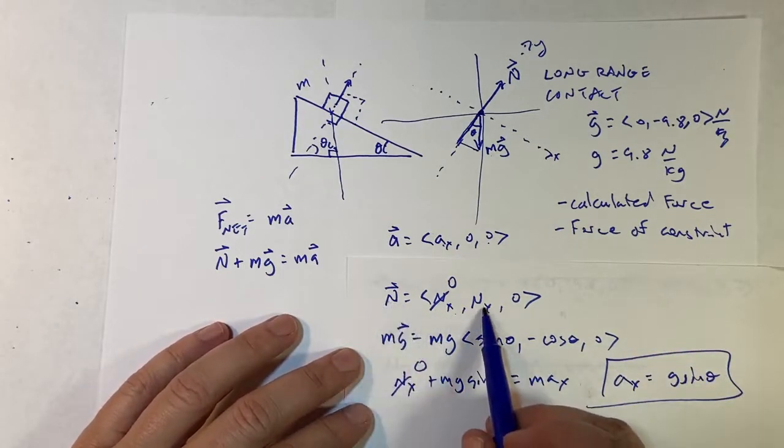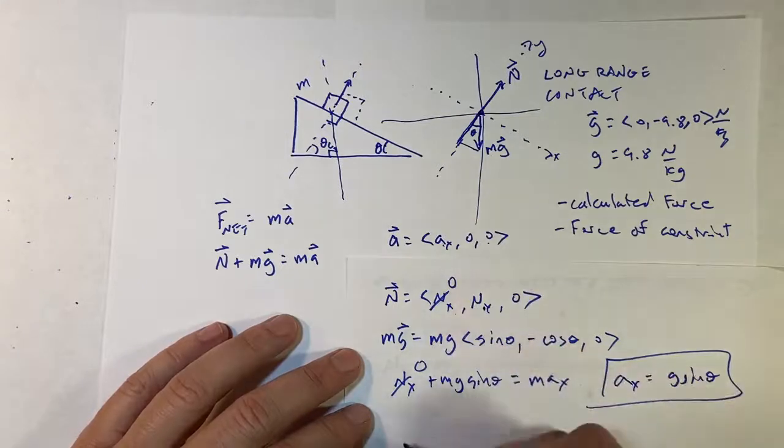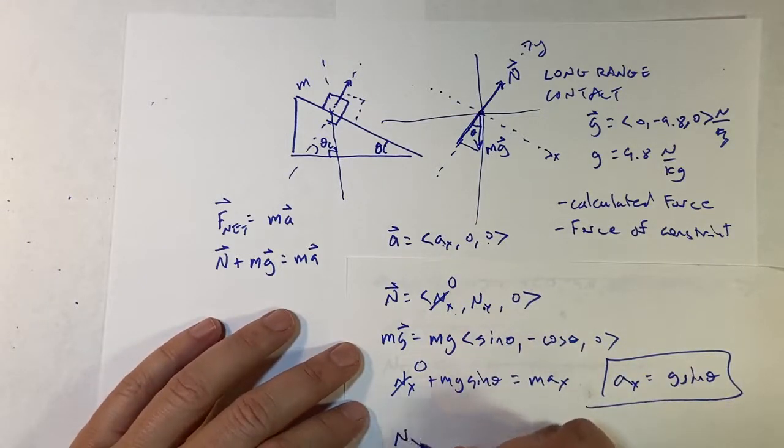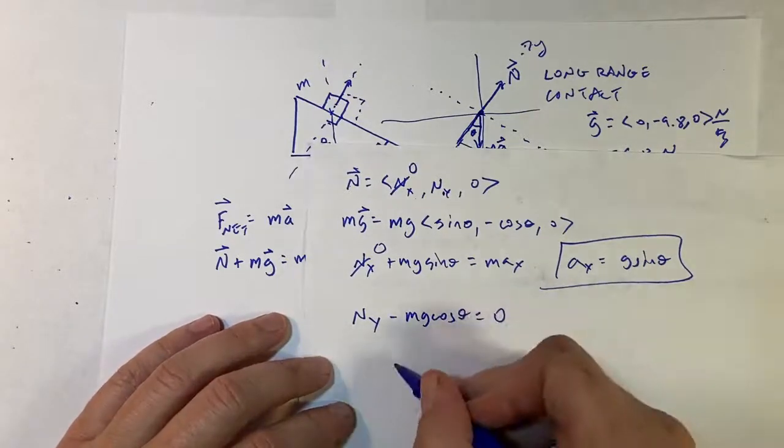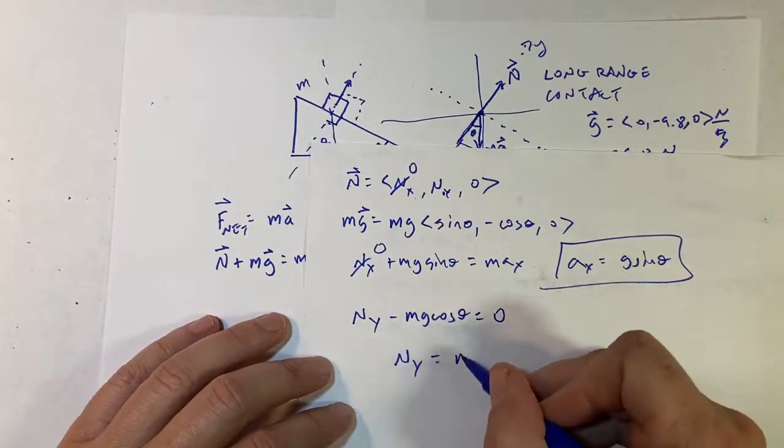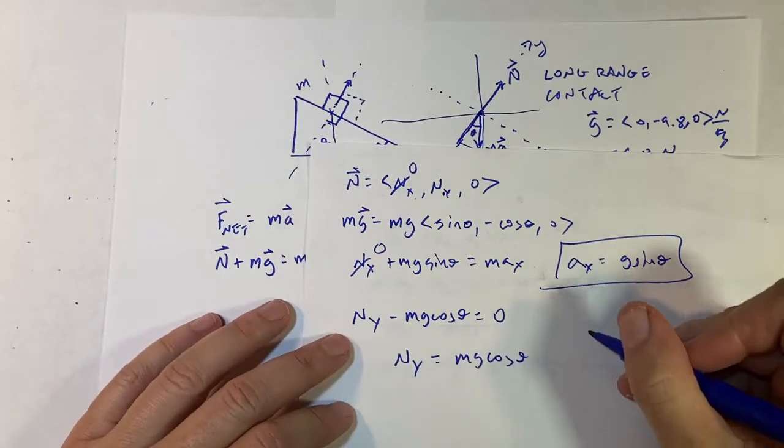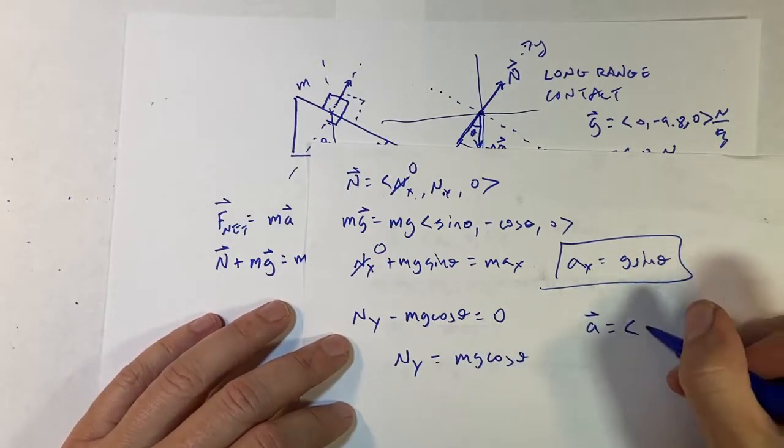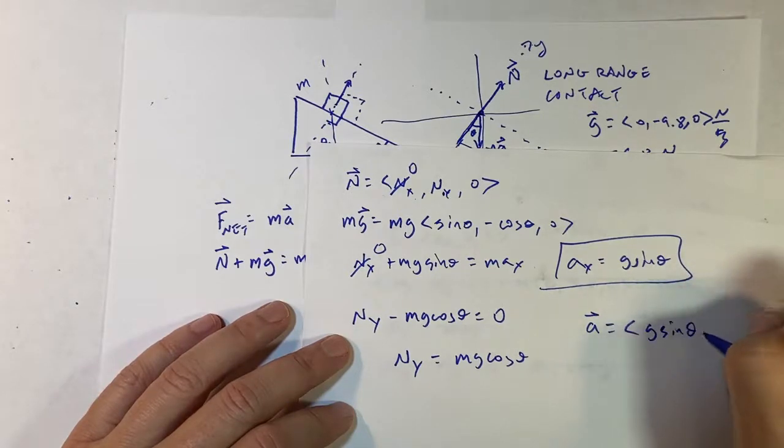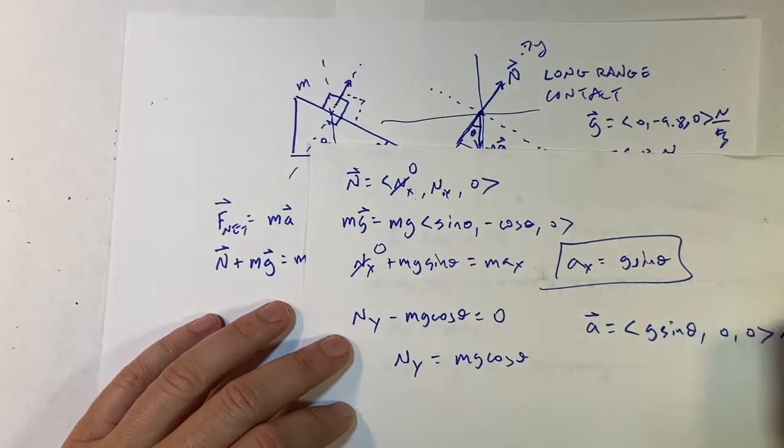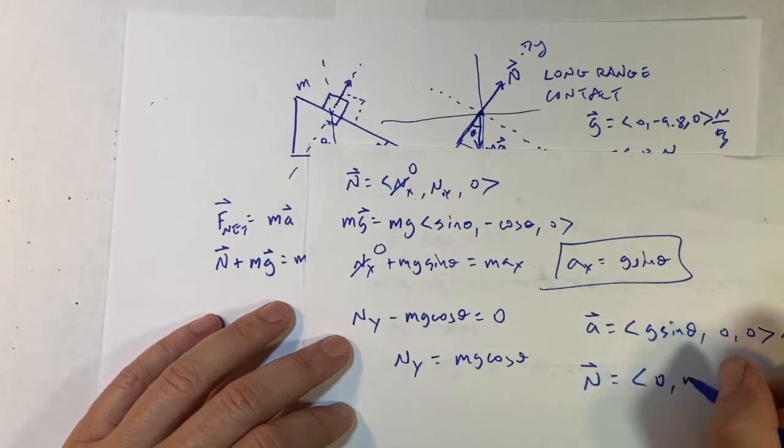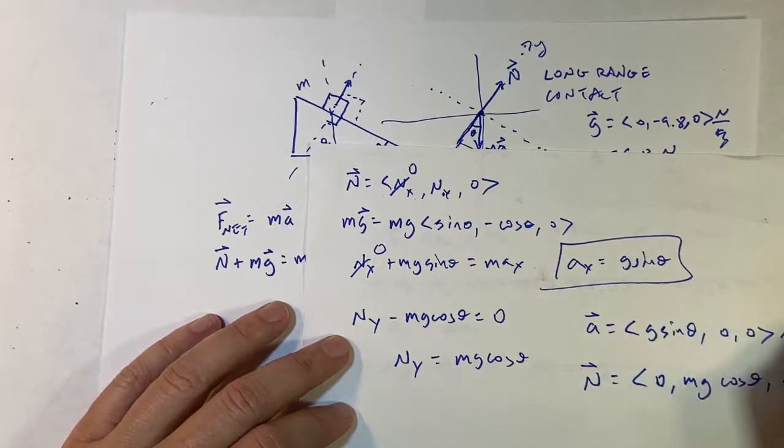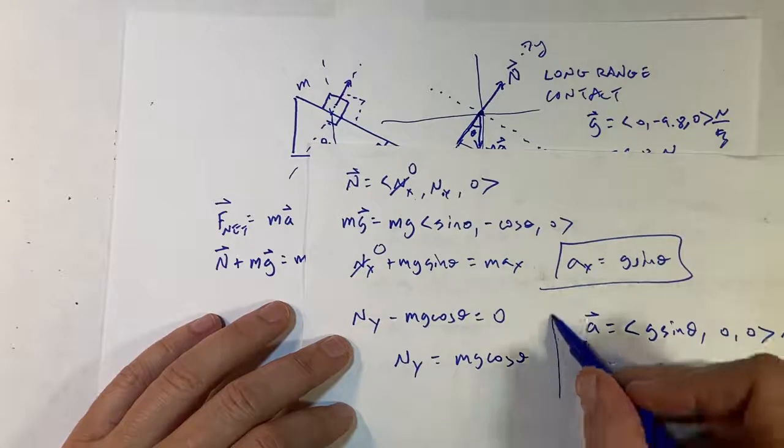Now what about the normal force? So I know that in the Y direction NY minus MG cosine theta equals M times zero. So NY is MG cosine theta. So now I get this, I get the acceleration. It's going to be equal to G sine theta zero, zero meters per second squared. And I know the normal force is going to be zero MG cosine theta zero.